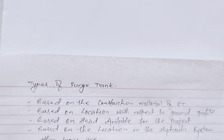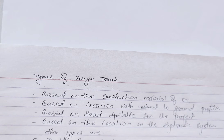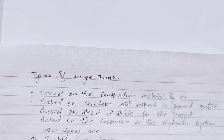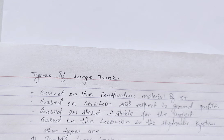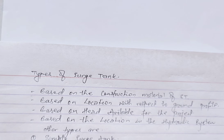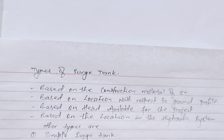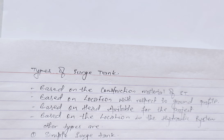Source tanks can also be classified based on location within the hydraulic system as upstream or downstream source tanks. Based on hydraulic functioning and cross-section shape, source tanks can be simple cylindrical, restricted orifice, differential, or source tanks with expansion chambers, among others.